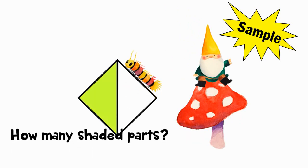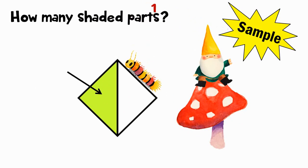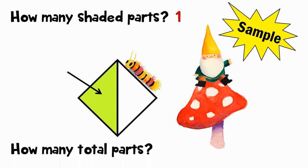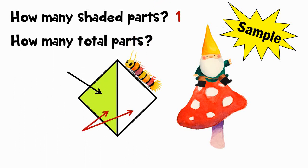Here is a sample to get you started. Look at the object. How many shaded parts does it have? This is the numerator. How many total parts does this object have? This is the denominator. What is the fraction of the shaded part? One half is the correct answer. One out of two parts is shaded.